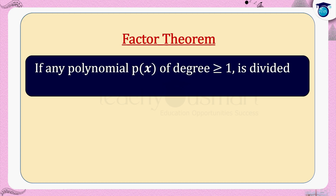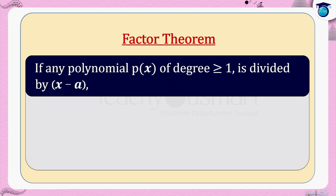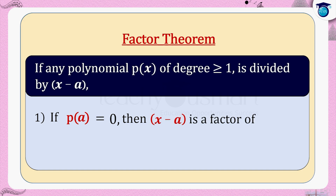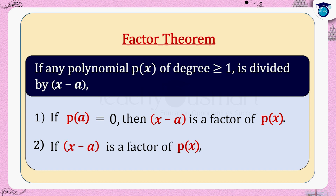That is: if any polynomial p(x) of degree greater than or equal to 1 is divided by (x − a) and if p(a) = 0, then (x − a) is a factor of p(x). Conversely, if (x − a) is a factor of p(x), then p(a) = 0.